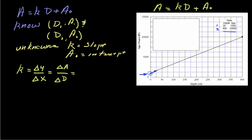And we have two data points, so that's easy for us to calculate. We take the second A minus the first, and divide that by the second depth minus the first, and that gives us our slope.